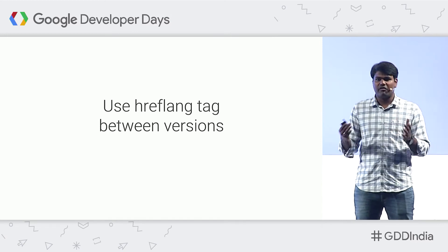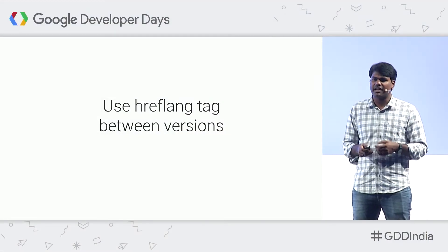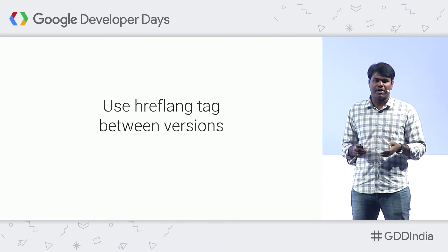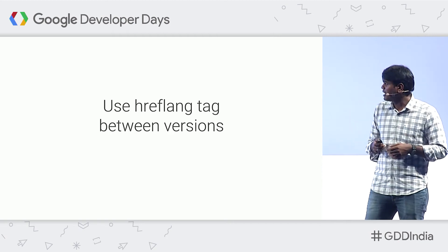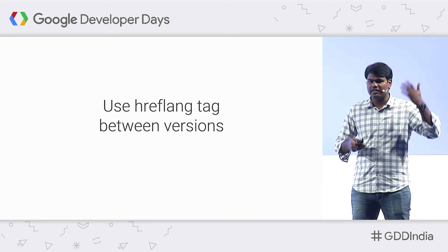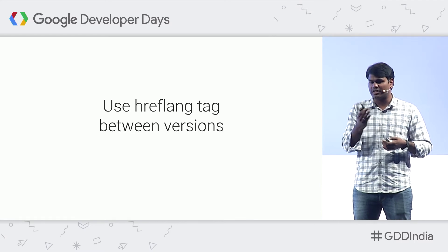If you have a website about Bangalore in English with the same content in Hindi and Kannada, the best way to let Google know these are the same content in different languages is by using the hreflang tag. You can use the hreflang tag in multiple ways. For HTML documents, simply add a link in the head section with rel alternate hreflang and the language code. For non-HTML documents like PDFs, send a header response with the hreflang tag. You can also use your sitemap for websites with thousands of pages.